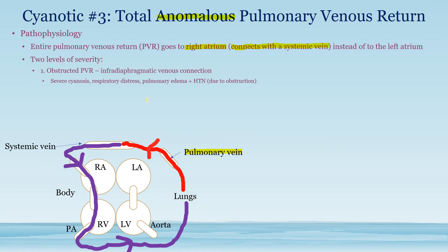There are two levels of severity. You have an obstructed pulmonary venous return with infradiaphragmatic venous connection — the pulmonary venous return goes underneath the diaphragm, comes back up, and then connects to the systemic vein to reach the right atrium. Because of this long distance traveled, there is a much higher risk of obstruction.